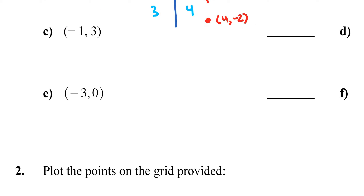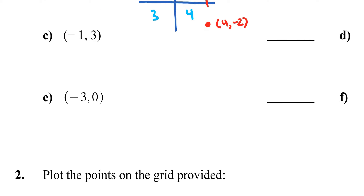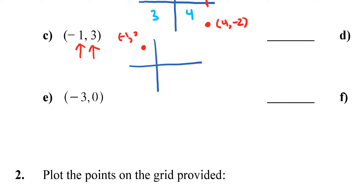For letter C, my point is negative 1 and 3, so that means you go left 1 and up 3. That puts you in quadrant 2.